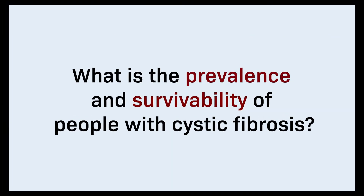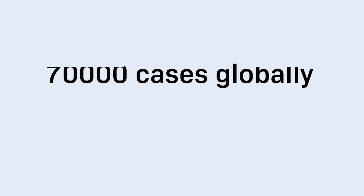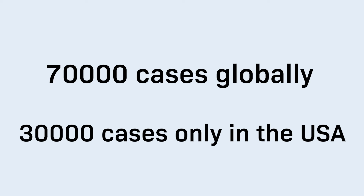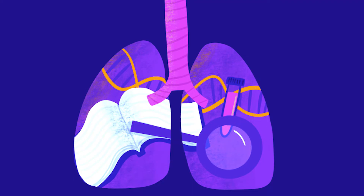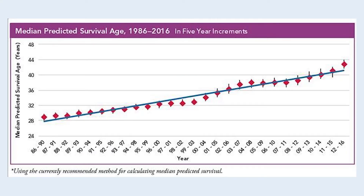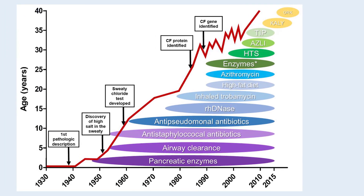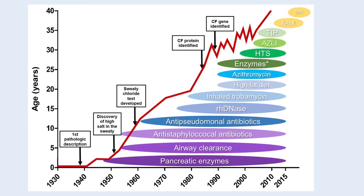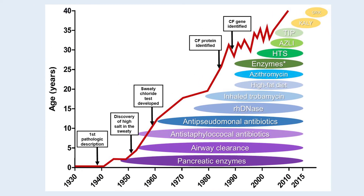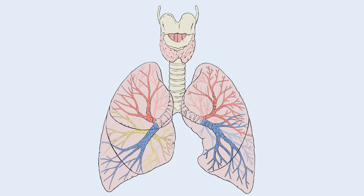So what is the prevalence and survivability of people with Cystic Fibrosis? About 70,000 people currently suffer from this disease worldwide, 30,000 of them solely in the United States, although it's very likely that in poorer areas this disease is underdiagnosed. The median survival age has risen from around 28 to 43 years between 1986 and 2016, thanks to the discovery and development of new treatments that help handle the symptoms much better, especially those related to the lungs, which is the main cause of death.